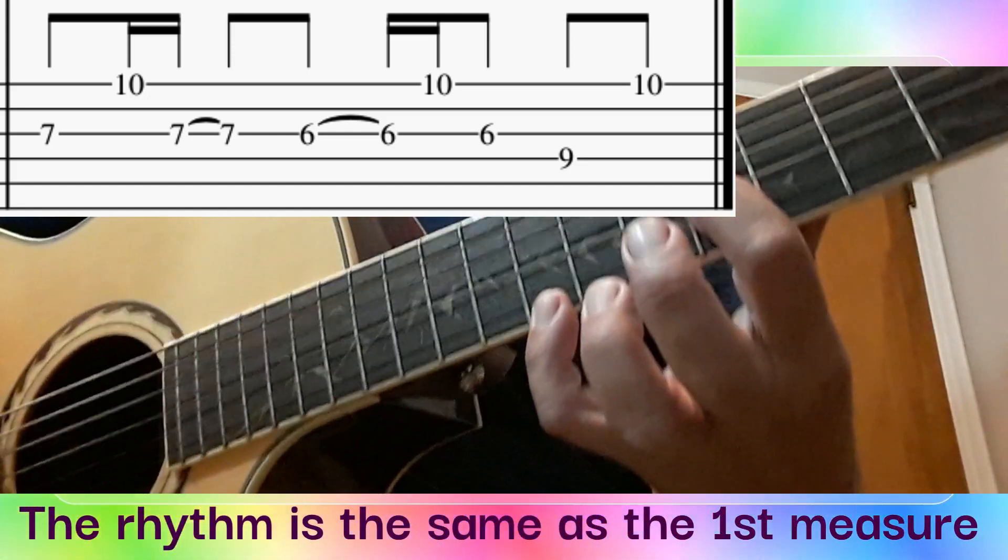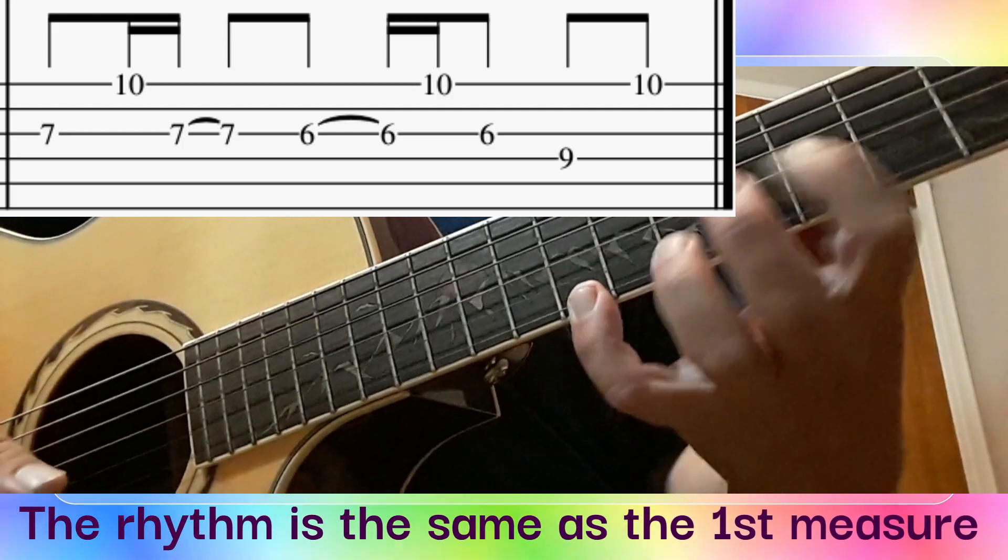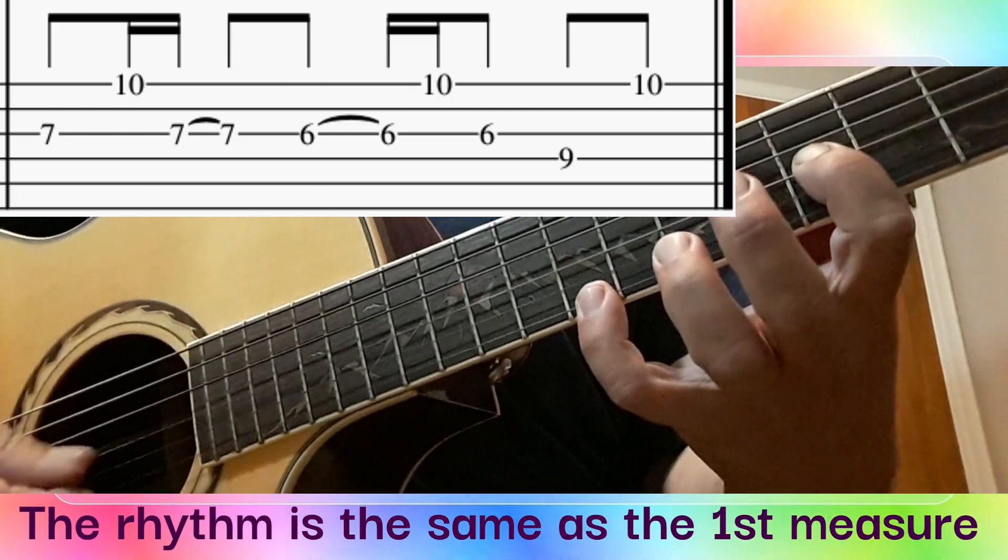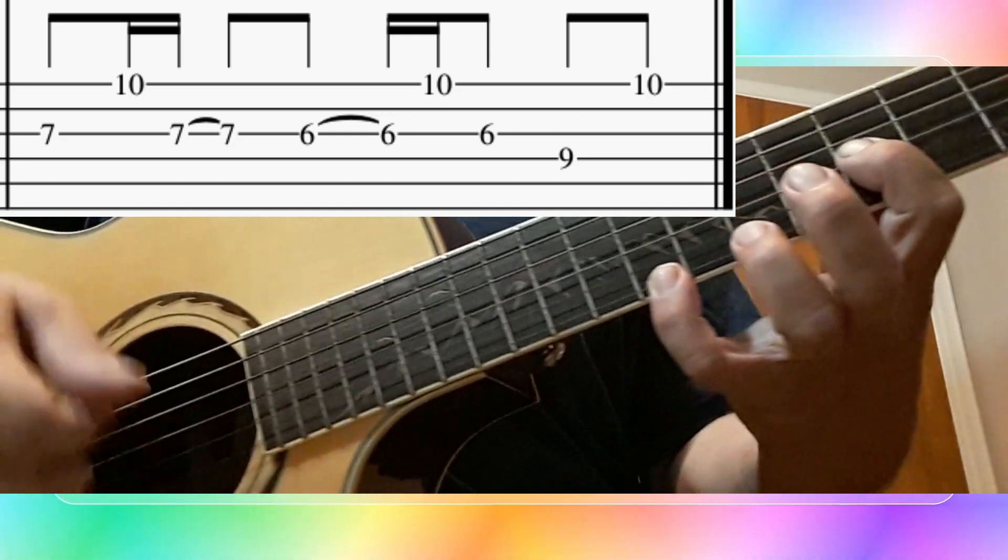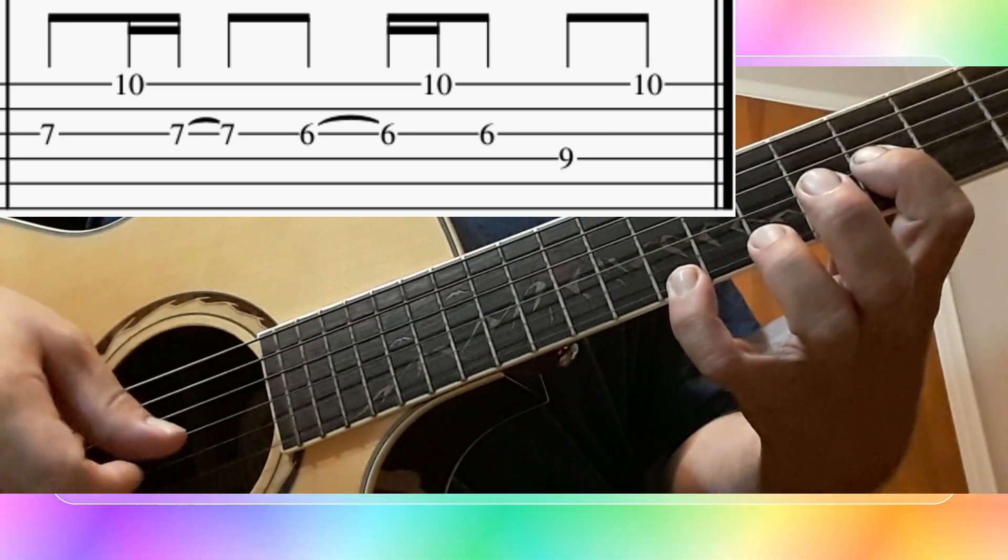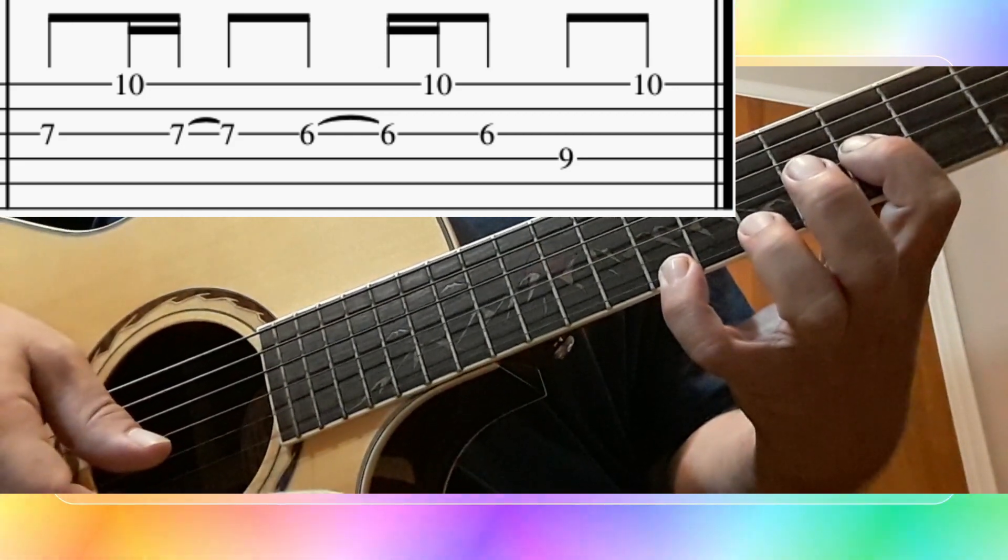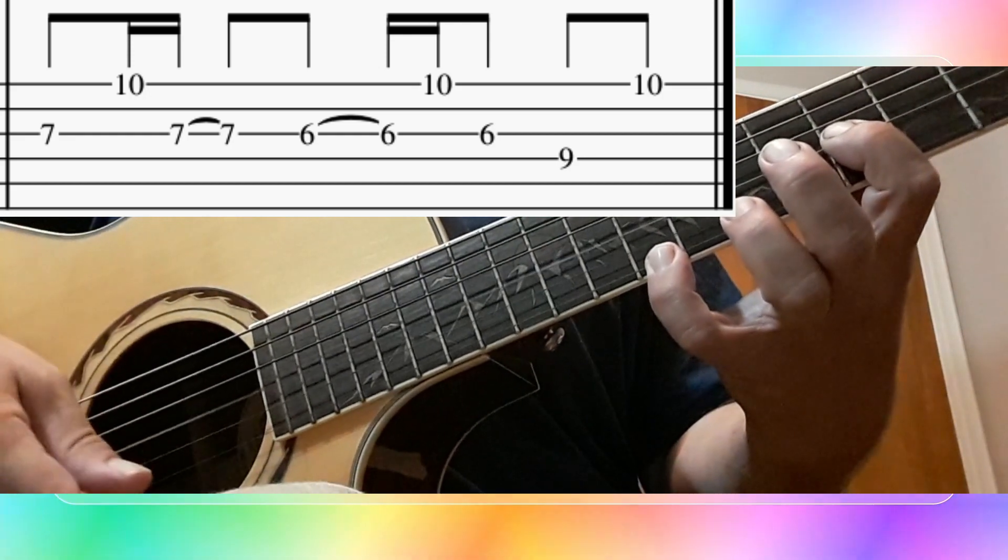Now you're going to drop your 1st finger down to fret 6. So it's moving from a D to a C sharp. Then play the high fret number 10. Okay, play the 6 again.